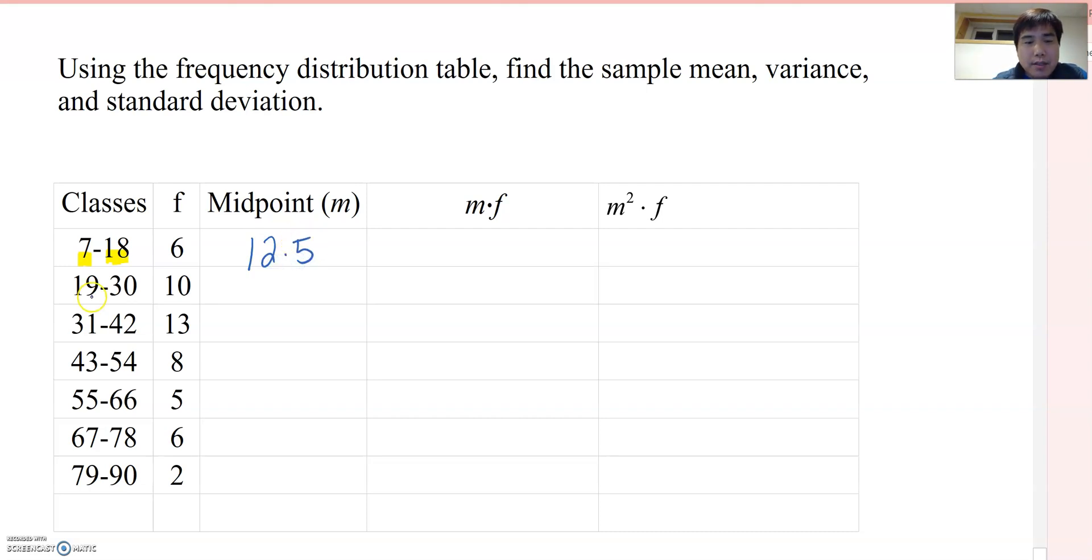The second class, 19 plus 30 divided by 2, then you will get 24.5. And if you keep on doing it, then you will get this value like this.